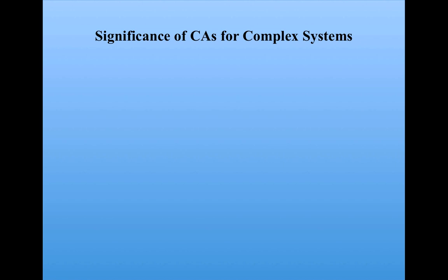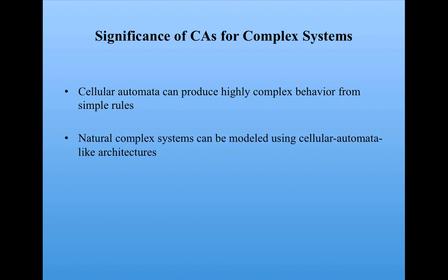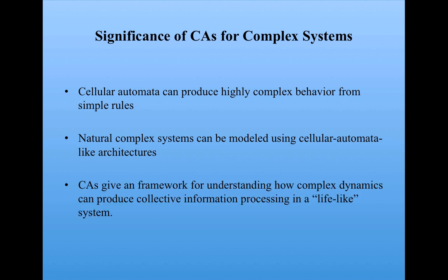Finally, let me just say a few words on the significance of cellular automata for complex systems. Well, you've seen that cellular automata are really idealized complex systems that can produce very complex behavior from simple rules. We've seen that natural complex systems can be modeled using cellular automata-like architectures. And that cellular automata give a framework for understanding how complex dynamics can produce collective information processing, that is, information processing that emerges from a collection of simple components in a lifelike system, where lifelike means decentralized, relatively simple components, limited communication among components, and so on.